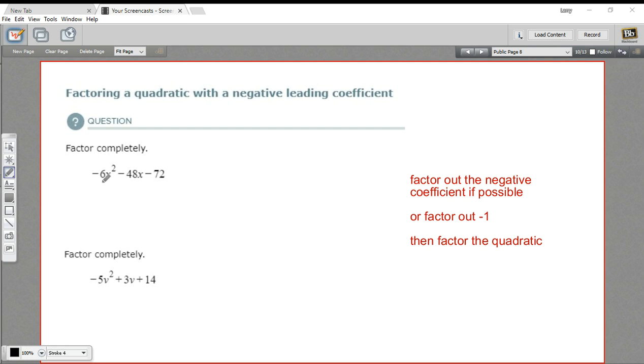In this first one, we have a negative 6 as our leading coefficient, and it looks like everything here can be divided by a negative 6. So let's go ahead and factor out that whole leading coefficient, a negative 6. So we're dividing everything by negative 6. Negative 6x squared divided by negative 6 is just a positive x squared. Negative 48, that'd be a positive 8x. And negative 72, that's positive 12.